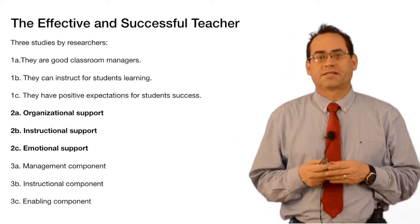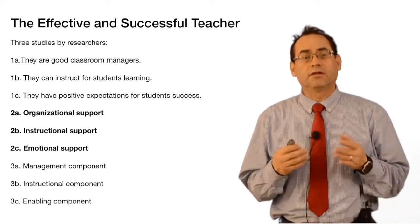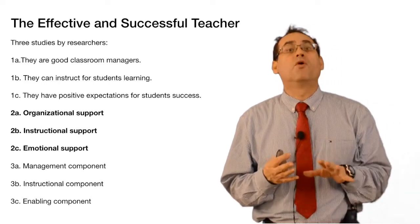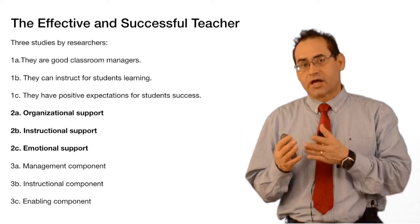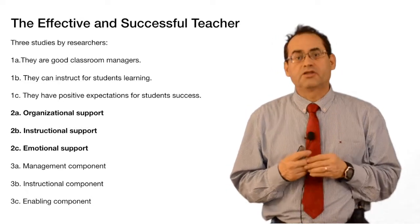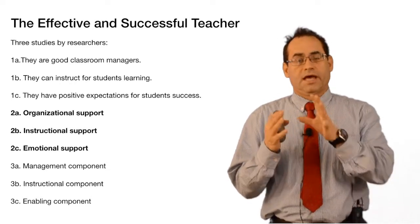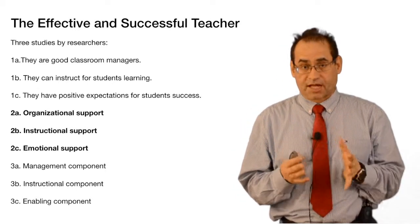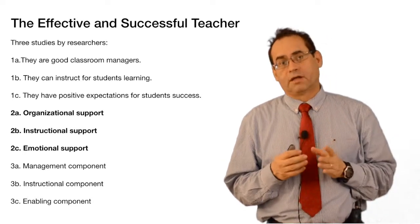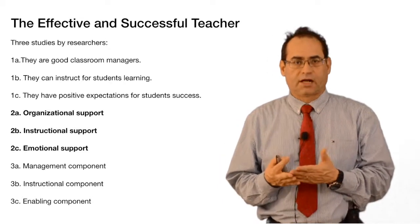For other psychologists, there are three barriers that prevent at-risk student learning. The students don't learn if the classroom is not well-managed — that's the management component. Number two, the instructional component: they need to be instructed, and teachers need to explain step-by-step the process in the classroom. And number three is the enabling component — the possibility that the teacher gives the student to be able to do something for the class or for themselves.